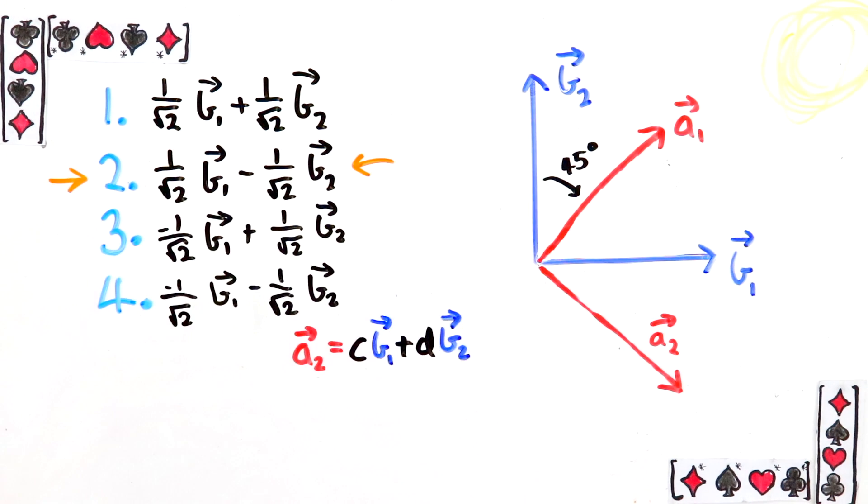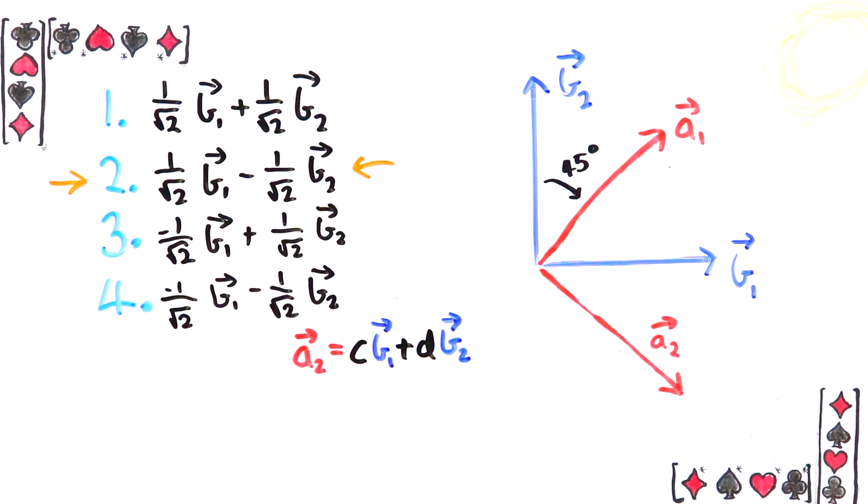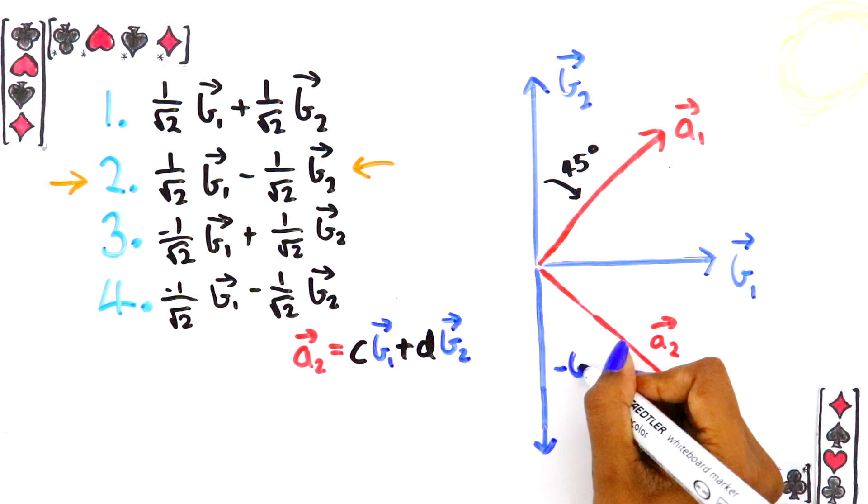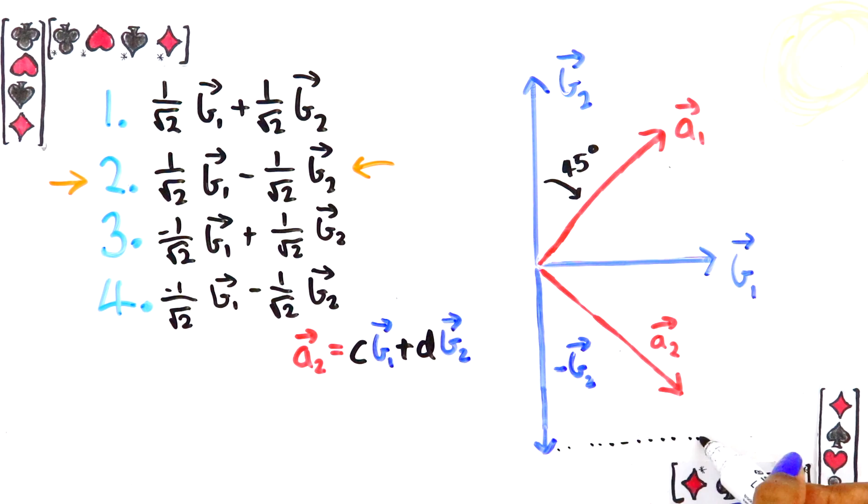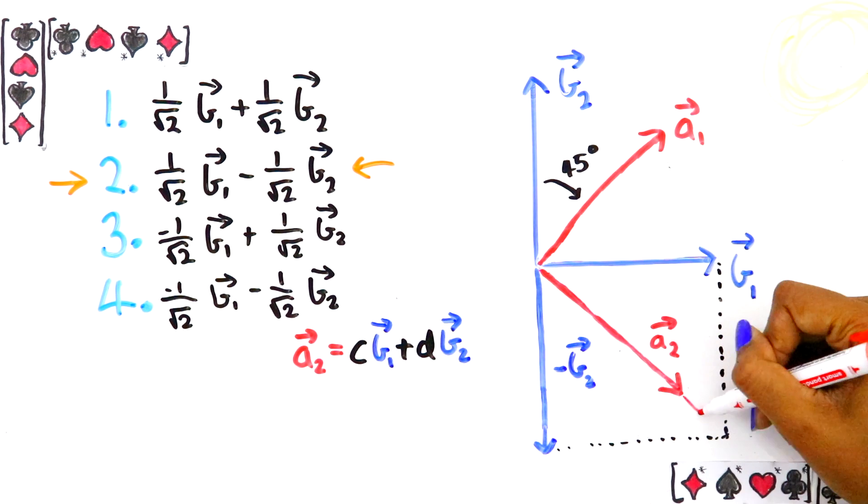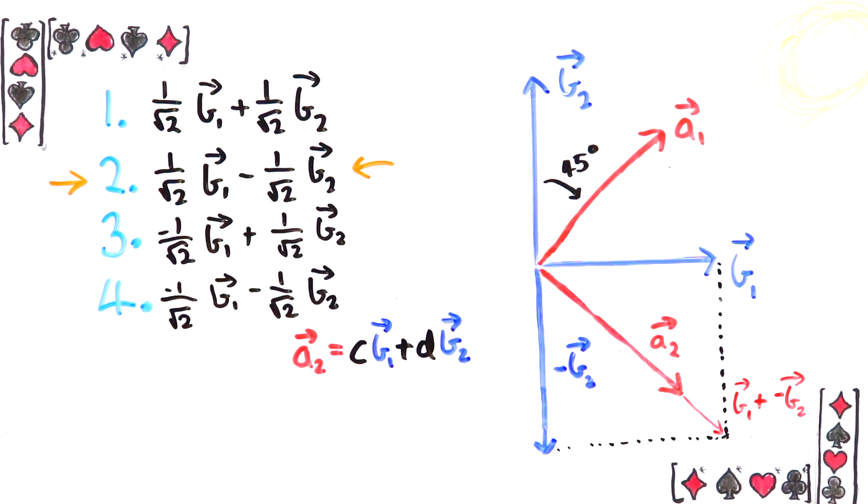The answer is 2. b1 minus b2 divided by square root 2. This is because if you turn b2 around to get minus b2, then add these two vectors, you do get something in the same direction as a2, but it needs to be shortened.